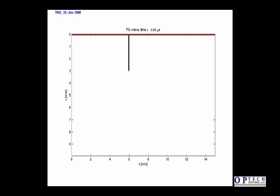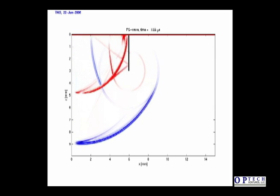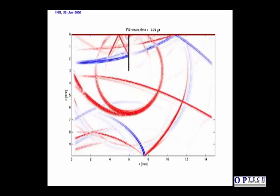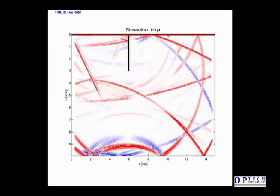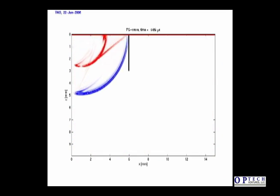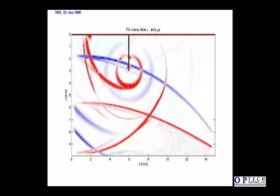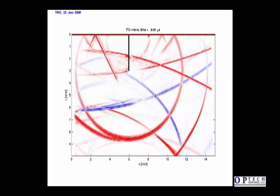We have simulated the waves that are generated and interact with the crack in a finite difference calculation. The laser-generated waves start at the upper left. Longitudinal waves are shown in blue and shear waves in red. When the waves reach the crack tip, the diffracted waves appear as circles centered at this position and eventually reach the surface opposite the crack, where they are detected. The strongest arrivals are longitudinal waves, but mode-converted waves can also be detected.